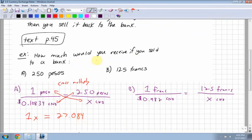So how much would you receive if you sold to a bank 250 pesos? You would receive $27 and basically 8 cents. And that's in Canadian currency because that's what you're trying to solve for, your x value, which would be $27.084 in Canadian currency.